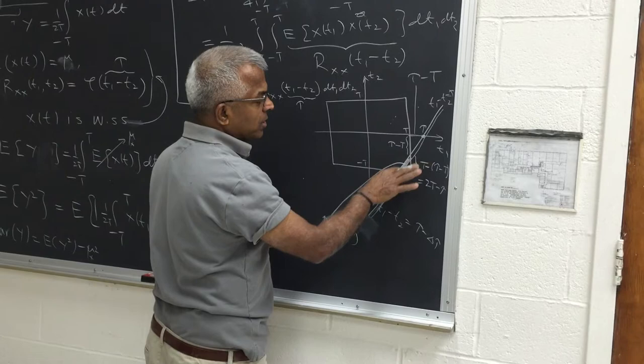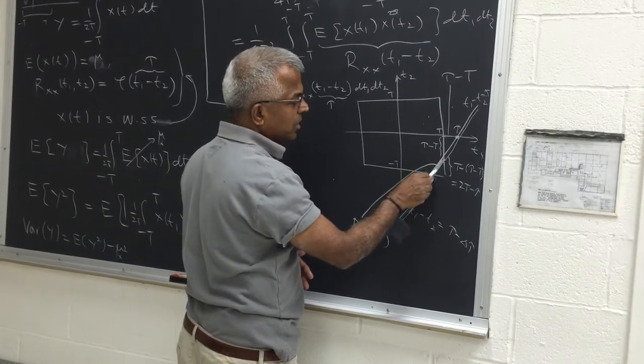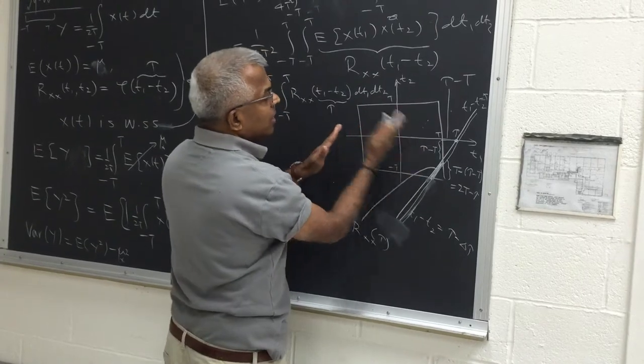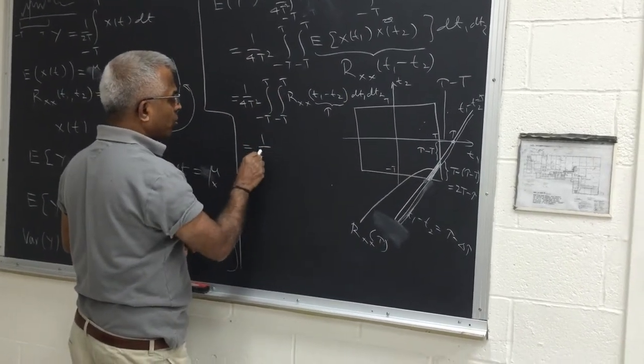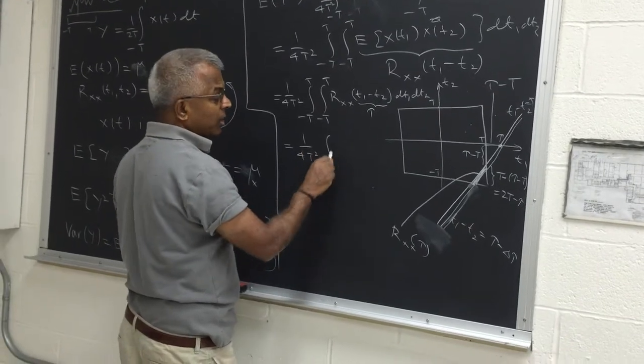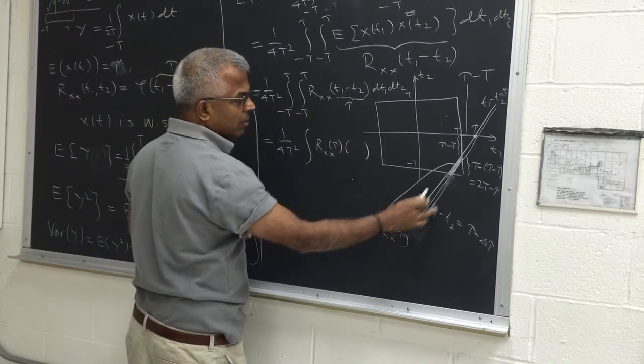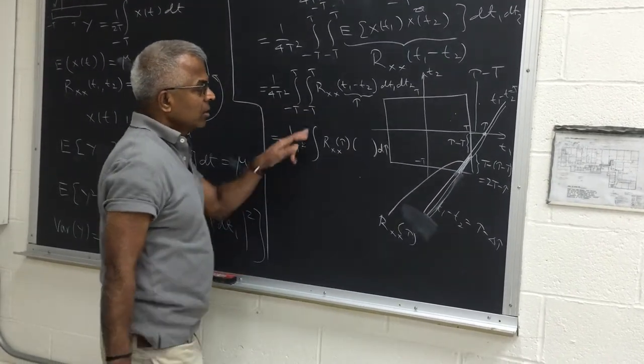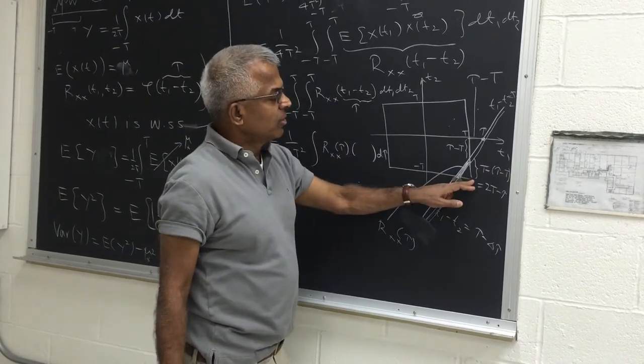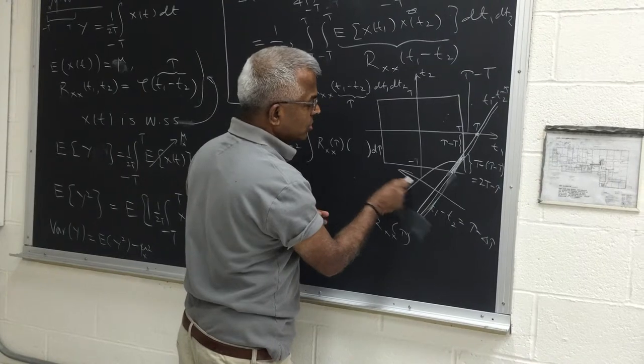So you can multiply by the area of this strip, this shaded strip, and then integrate by sliding this strip across. So essentially, this is going to be 1 over 4t squared, one integral R_XX of τ multiplied by the area that needs to be determined, multiplied by dτ. And the limits are from this extreme to this extreme for τ, because τ goes this way.